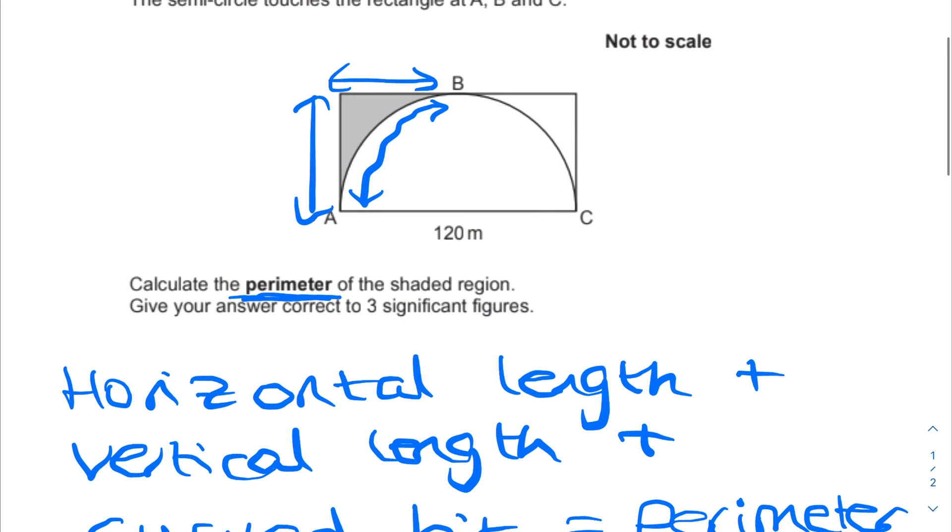So this is a circle fact that you're meant to know: from the center of the circle to any corner of a circle will always be the same length. So in this case that is going to be half of the diameter.